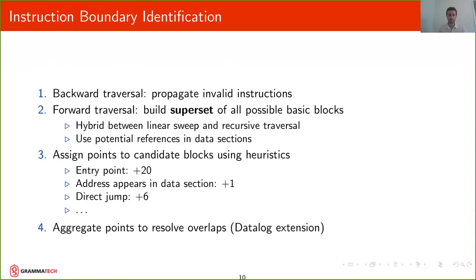Once we have this superset of possible basic blocks, these candidate blocks, then we're going to assign points to these candidate blocks using heuristics. So for example, if a block is an entry point, we're going to give it many points. If the block address appears in a data section, then we're going to give it some points. If the block is jumped from another block, we're going to give it points.